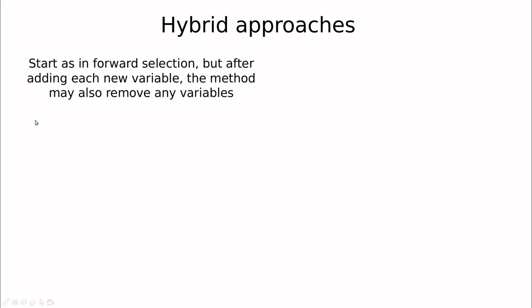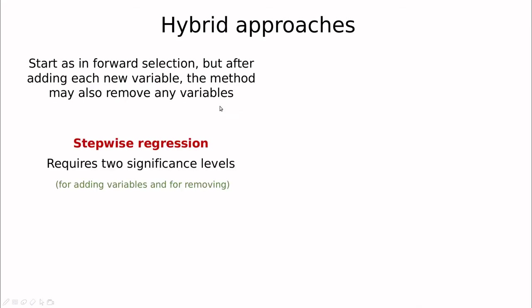Of course there are some hybrid approaches to overcome that and one of the most popular one is to start as in forward selection adding one variable at a time but each time you do that you have to remove some variables to check if your precision has increased or decreased.